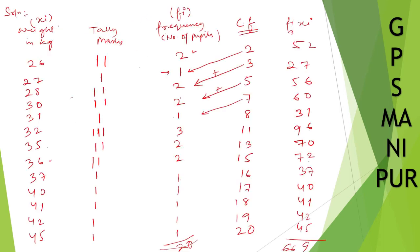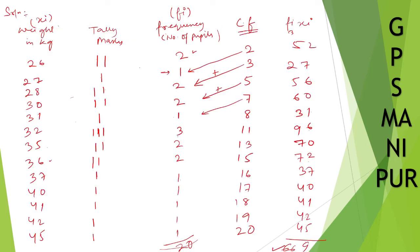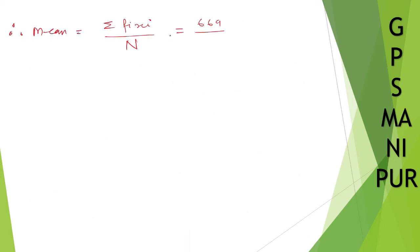So now we need to find out mean. The formula for mean is summation of fi xi divided by N. What is summation of fi xi? 669. And what is N? N is equal to 20. So divide 669 by 20. The calculation gives 33.45. So 33.45 is the mean. I hope you understand this much.